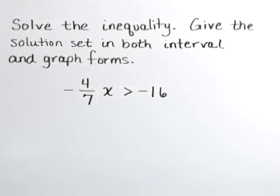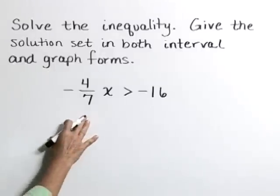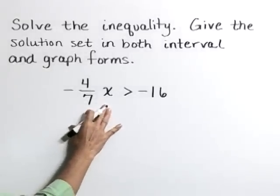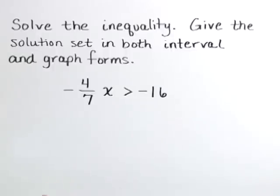Solve the inequality. Give the solution set in both interval and graph forms. Here we have the inequality statement, negative 4 sevenths x is greater than negative 16.